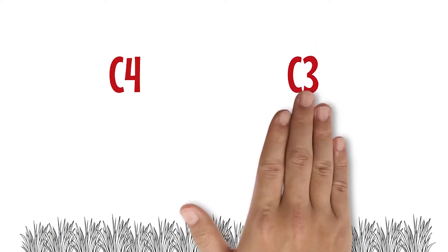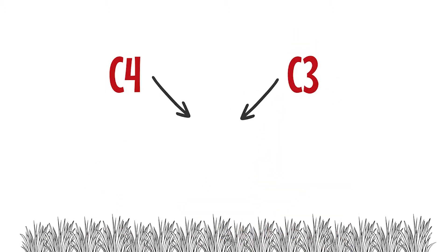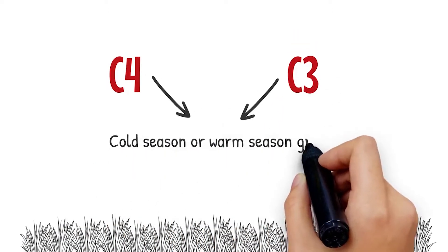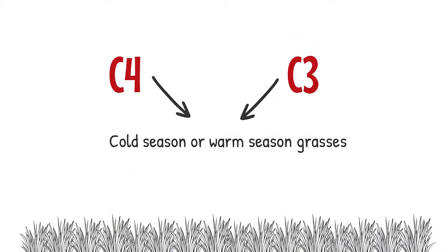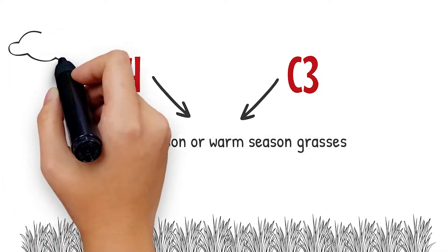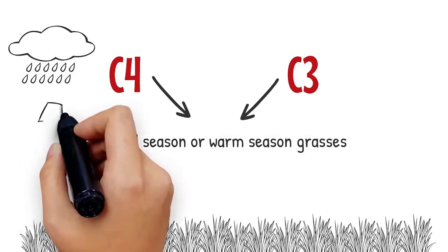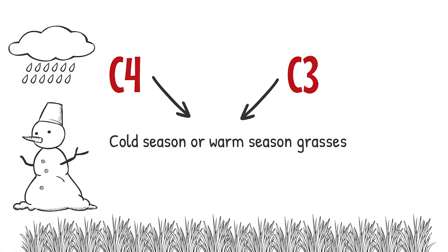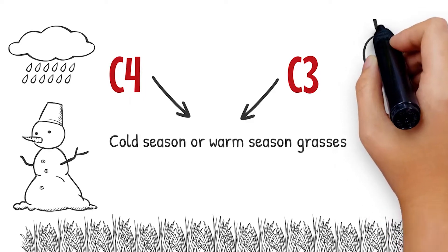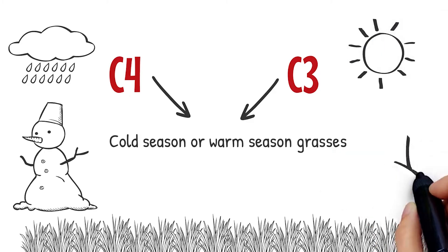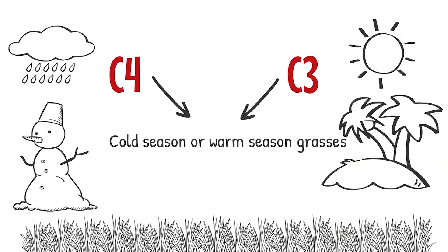C4 and C3 grasses, also known as cool season and warm season grasses. As a generalization, C3 plants tend to prefer cooler climates and moisture conditions and are very winter active, whereas C4 plants grow better in warmer and drying conditions.